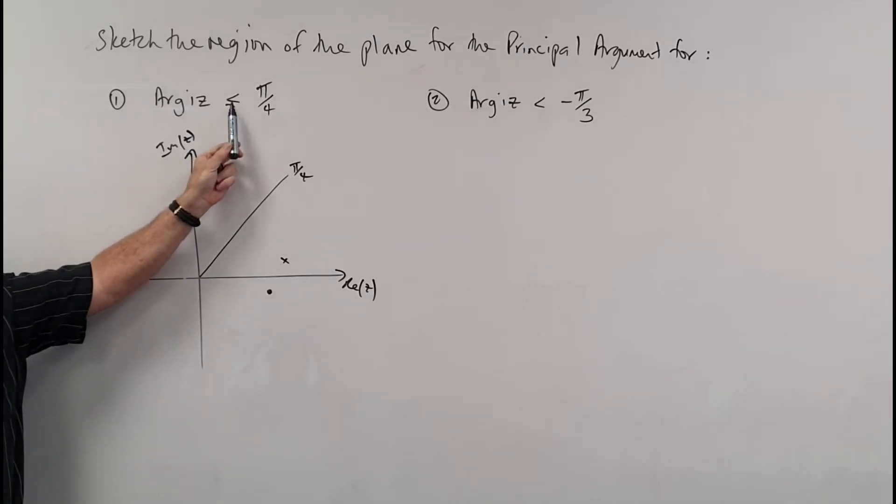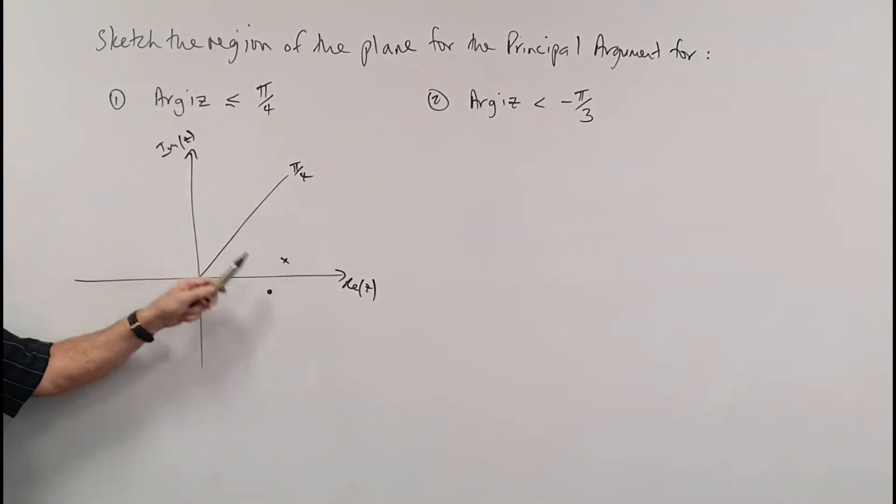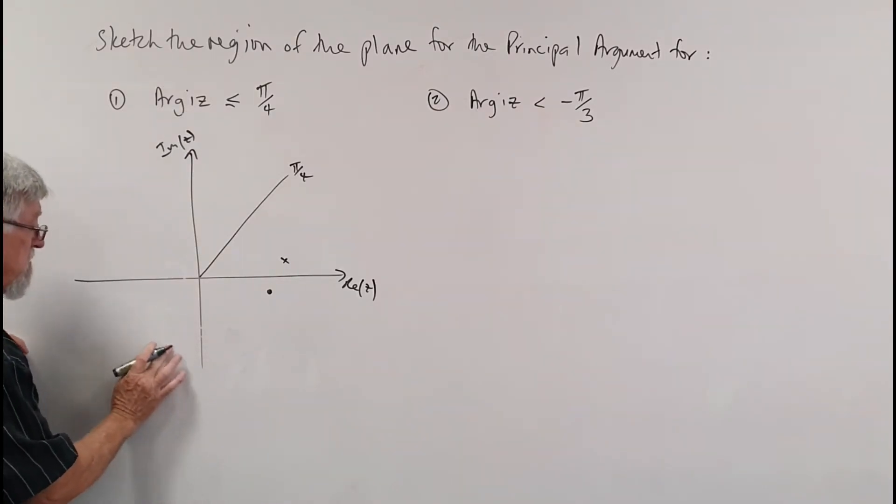We said we want less than π/4. So would that point satisfy less than π/4? No, because it goes around to here. Would that point satisfy π/4? No, it goes around to there. What about this one here? So if I need to put all those different symbols, let's put a little box through, okay?